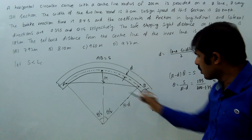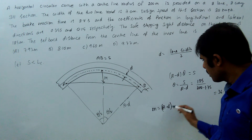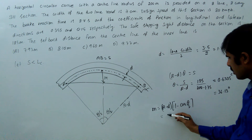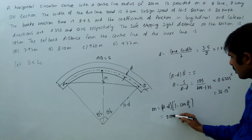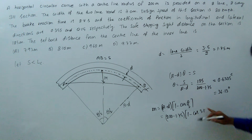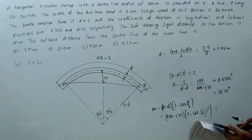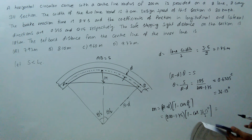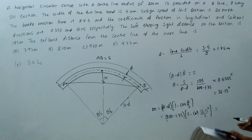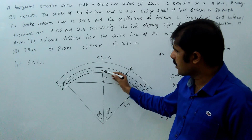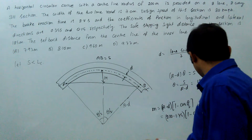The setback distance m is given by m = (R − d)(1 − cos(θ/2)). Substituting: m = (200 − 1.75)(1 − cos(36.13/2)) = 198.25 × (1 − cos 18.065°) = 9.77 meters. Therefore, the setback distance from the center line of the inner lane is 9.77 meters — Option D.